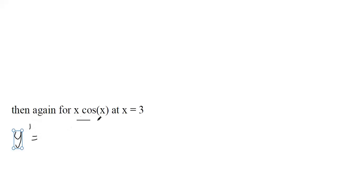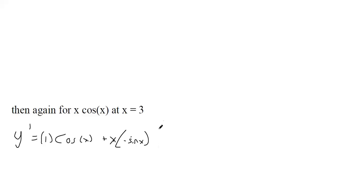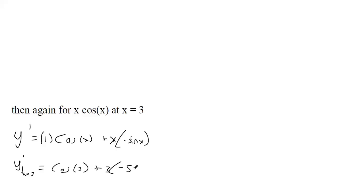For the next one, the first thing we want is the equation of the tangent line, so we need a derivative with respect to x. That requires the product rule, since it's two different functions of x. The derivative of the first function is 1 times the second kept the same, plus the first function times the derivative of the second, which is −sin(x). To find the slope at x = 3, we plug 3 into the derivative: cos(3) + 3·(−sin(3)).